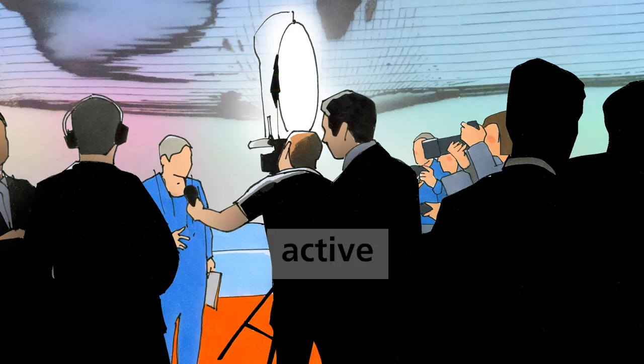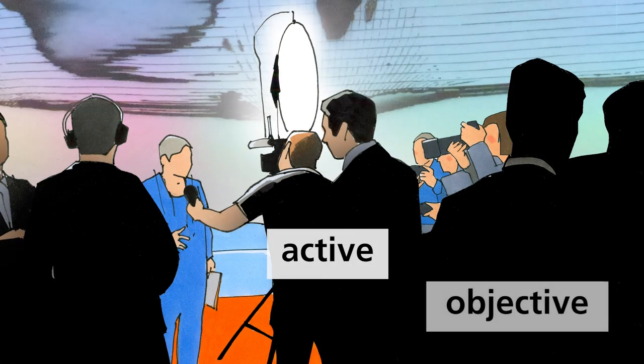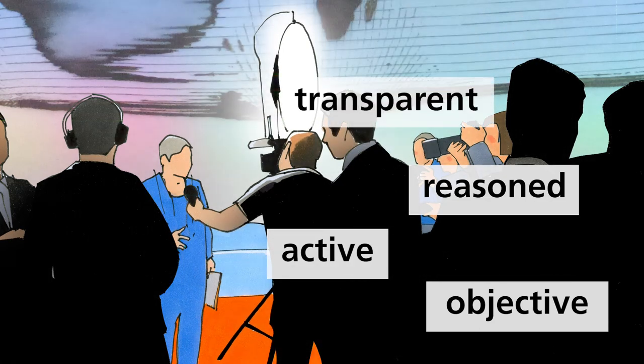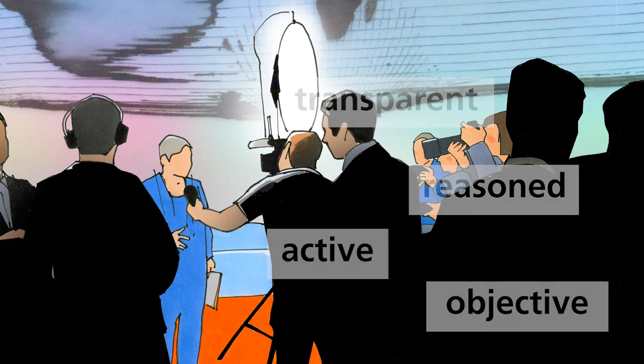The Federal Council must actively and objectively inform the public about its decisions. It must explain why it has decided to do something or not do something. It cannot withhold information. It must take responsibility when things don't go to plan.